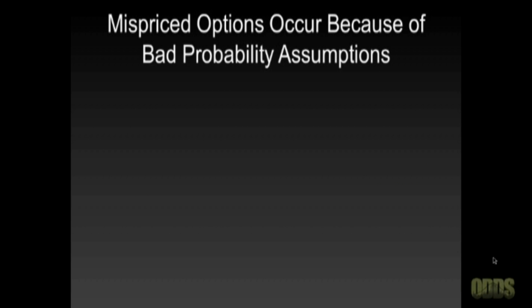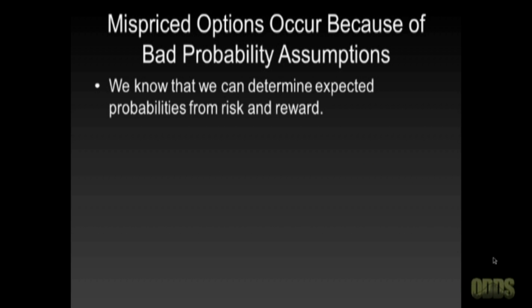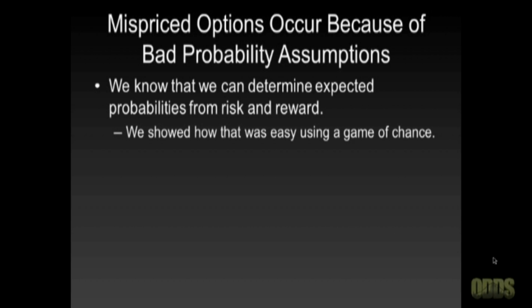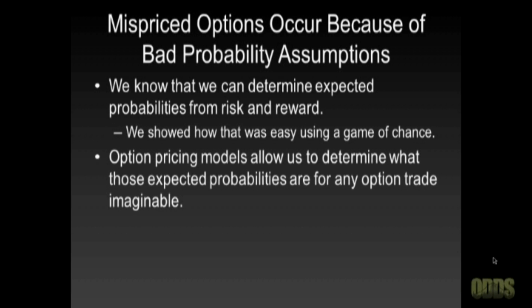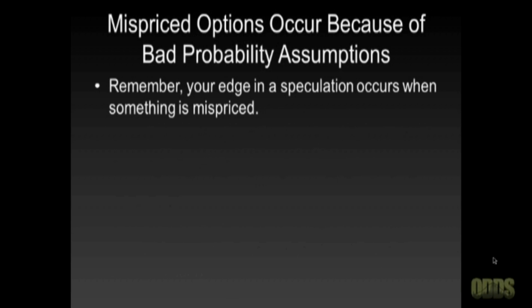So how do we know the probability assessment is distorted? We know that we can determine expected probabilities from risk and reward — we showed how that was easy using a game of chance. Option pricing models — and this is important — allow us to determine what those expected probabilities are for any option trade imaginable. We can then compare these results to what has actually happened in the market to see if the expected probability matches reality.